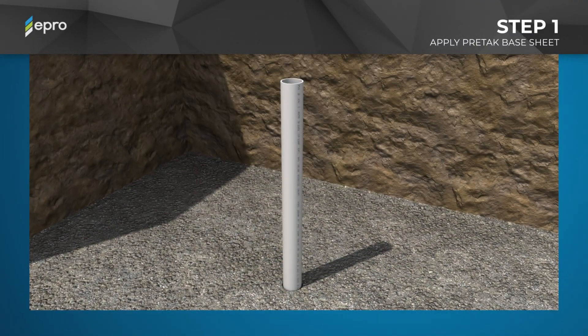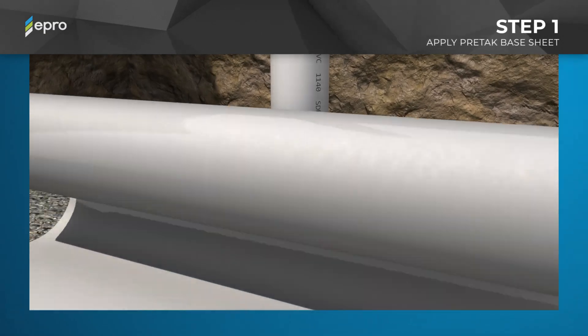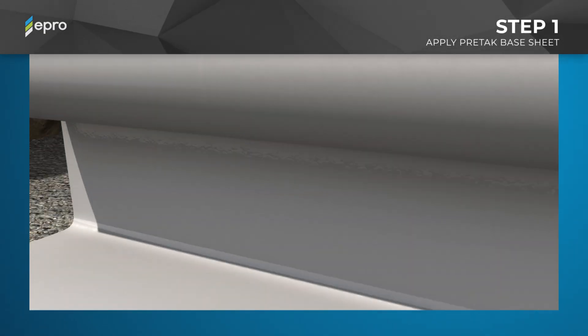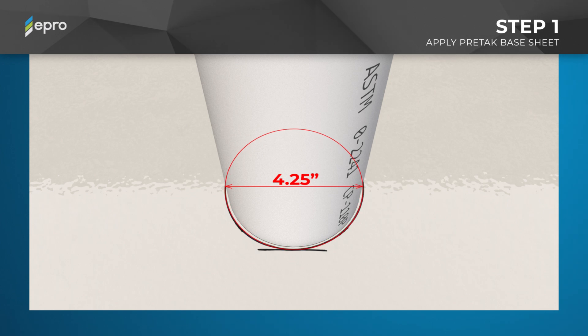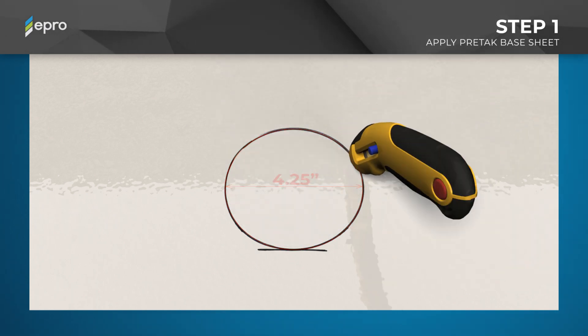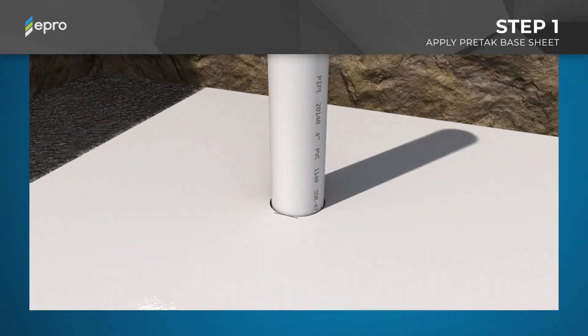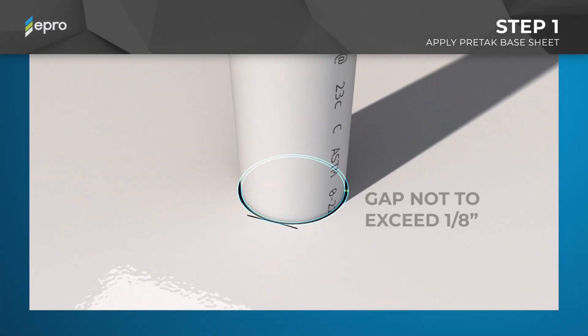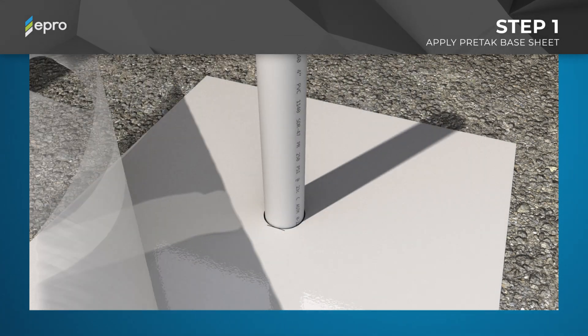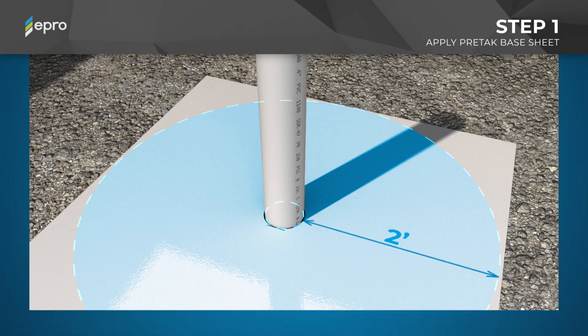Step 1: Apply the PRETAC base sheet around the penetration. Roll out the PRETAC field sheet up to the base of the pipe with the adhesive surface of the PSA towards the applicator. Use a permanent marker to mark the PRETAC membrane where it meets the base of the penetration, then cut a hole that is one quarter of an inch wider than the pipe's outside diameter. Carefully slide the PRETAC membrane down over the pipe and confirm that the gap between the PRETAC sheet and the pipe is no greater than one eighth of an inch. Finally, remove the release liner over the PSA surface within two feet of the pipe penetration.